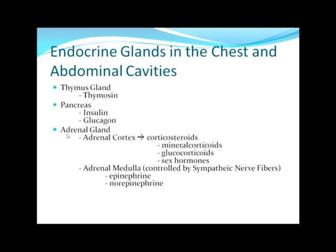The adrenal gland sits on top of the kidneys. It is basically two glands in one: the adrenal cortex, which is the outer portion, and the adrenal medulla, which is the inner portion. The cortex is divided into three different regions: the outermost layer produces mineralocorticoids, the middle layer produces glucocorticoids, and the innermost layer produces sex hormones.